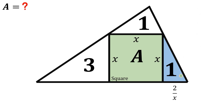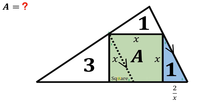From this vertex, we will draw a segment parallel to the opposite segment. Since these two segments are parallel, these two right triangles are congruent. These two angles are equal, these two angles are also equal, and they have the same height — so by the AAS postulate these two right triangles are congruent. Therefore, the base of this new right triangle is also 2 over x, and its area is also one square unit.